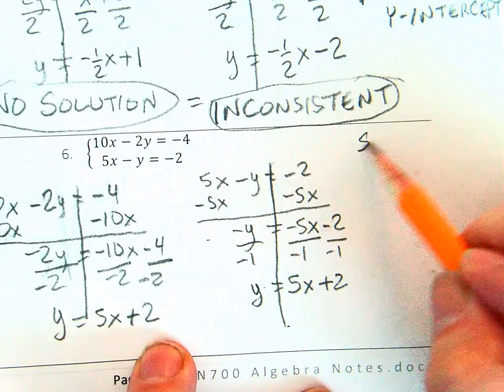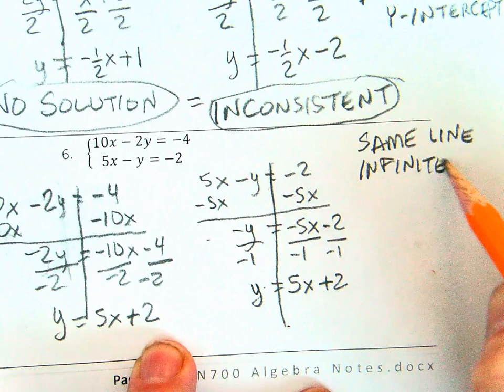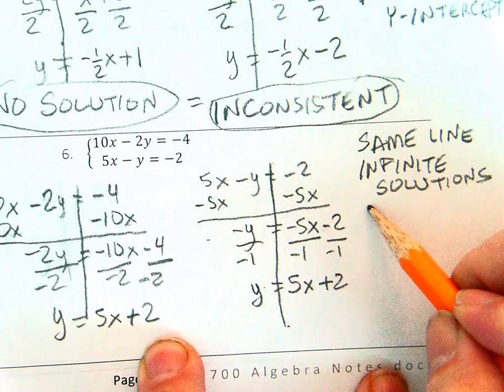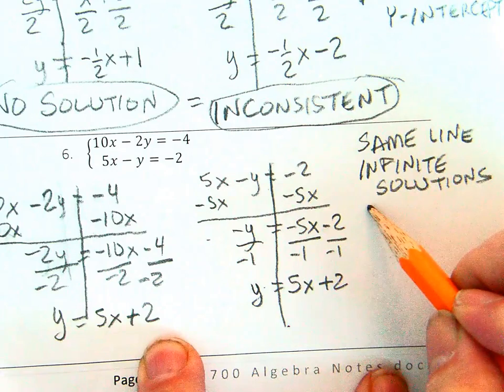A set of equations that graph as the same line have infinite solutions, all the points on the line. These are called consistent equations, a system of consistent equations. They are dependent upon one another, so consistent and dependent.